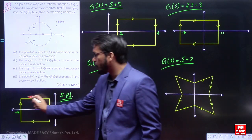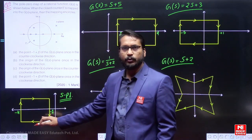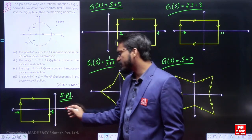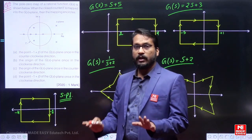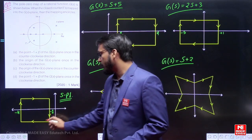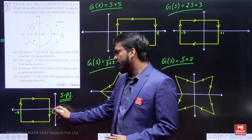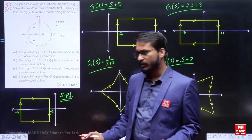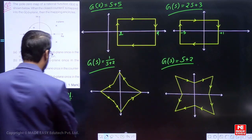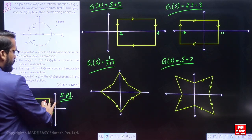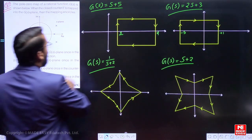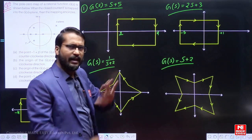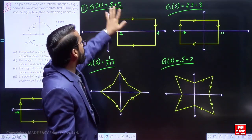Arbitrarily, I have chosen a closed contour on the S plane — we have the real axis and the imaginary axis. The closed contour is represented by this rectangle, with points at minus 1 and minus 4. Now, let us take the function GS. I have randomly chosen GS equal to S plus 5.